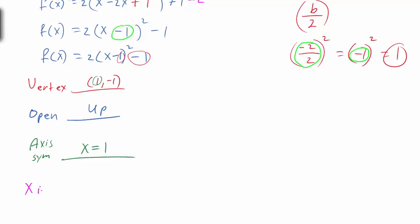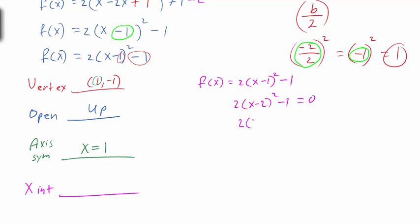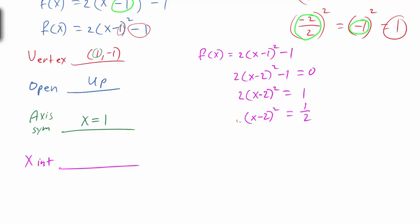To find the x-intercepts, we set f(x) = 0: 2(x - 1)² - 1 = 0. Adding 1 gives 2(x - 1)² = 1. Dividing by 2 gives (x - 1)² = 1/2. Taking the square root: x - 1 = ±√(1/2). Adding 1 to both sides: x = 1 ± √(1/2).